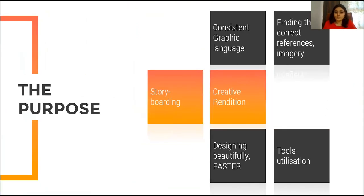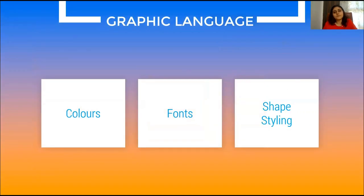In presentations you have two parts. One is storyboarding, which is the actual content and the flow of the presentation. The other is the creative rendition — the look of the presentation — how you make the content stand out using different graphics. Now, what does a graphic language include? The three elements that make a graphic language are the colors, the fonts, and the shapes you use.